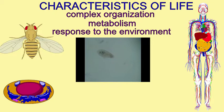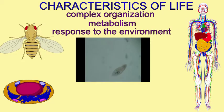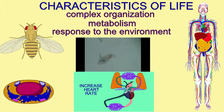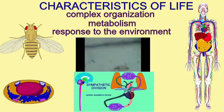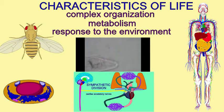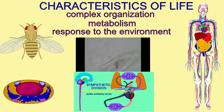All living things, including the simplest cells, are capable of detecting changes in the environment and then responding to the environment. In more complex organisms, nervous systems can respond to the environment and coordinate the reactions of other tissues, such as muscles and glands, as an organism chooses an appropriate response to the environment.